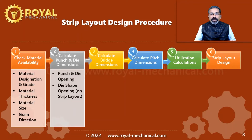Step two is to calculate the punch and die dimensions. Shearing happens between the cutting edge of the punch and the cutting edge of the die, and cutting clearance is very essential for the shearing to happen. In this stage we are going to calculate the punch dimensions, cutting clearance dimensions, and the die opening dimensions.